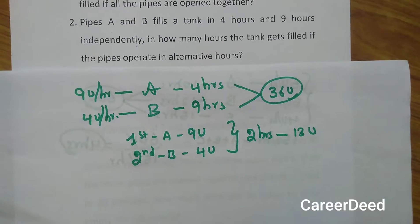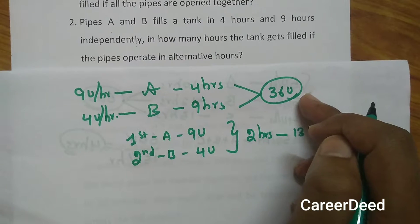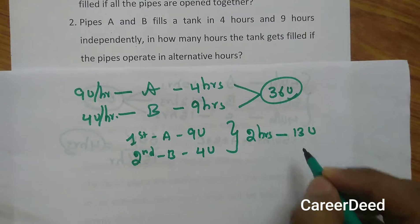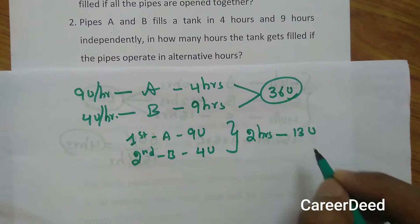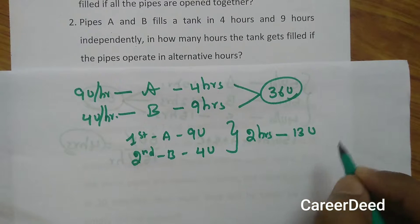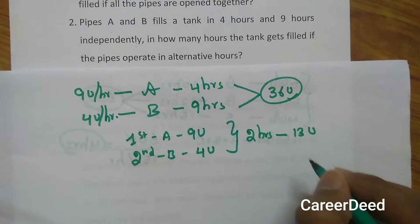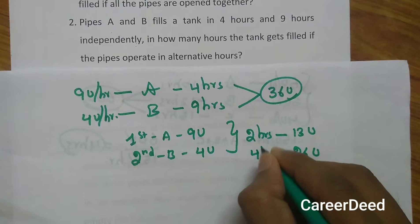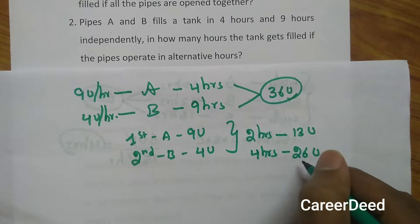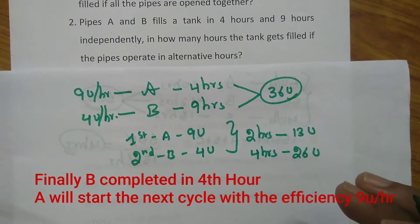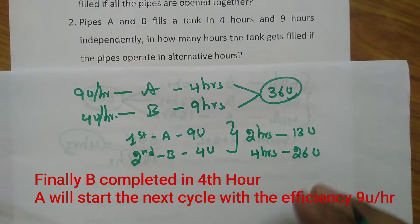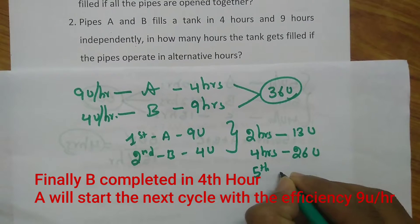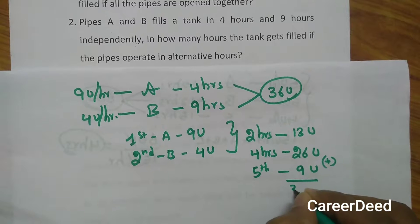So 2 hours are needed to fill 13 units. We need to complete 36 units total. We take the highest multiple of 13 that is below 36: that is 13 × 2 = 26 units, which takes 2 × 2 = 4 hours. So in 4 hours, 26 out of 36 units are completed. Since the last cycle ended with B, the next turn goes to A. In the 5th hour, A works and completes 9 units, giving a running total of 35 units.